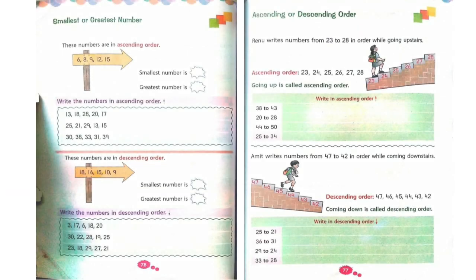Children, I believe now everyone is clear with the concept of greatest number and smallest number, along with ascending and descending order. Now I want all of you to do page number 77 and 78 as your assignment. Thank you and have a nice day!